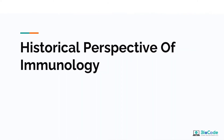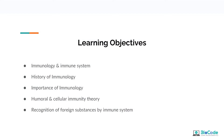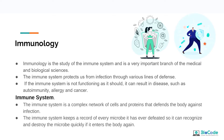In this lecture on the historical perspective of immunology, you will learn about the immune system, the history of immunology, its importance, theories about humoral and cellular immunity, and recognition of foreign substances by the immune system.